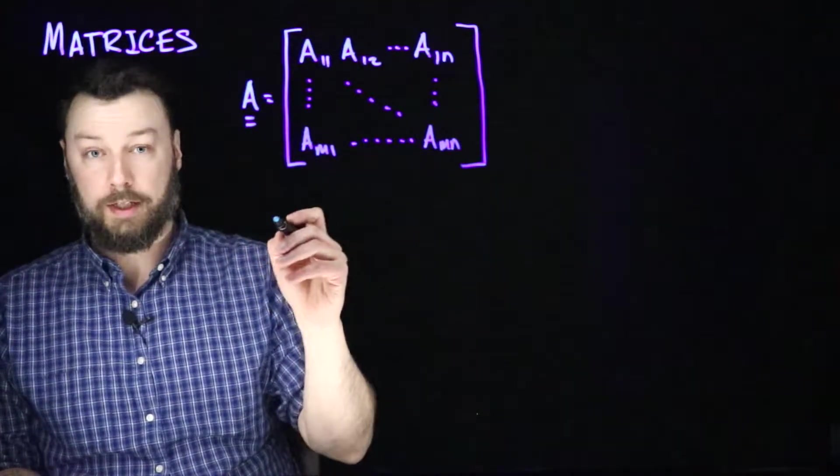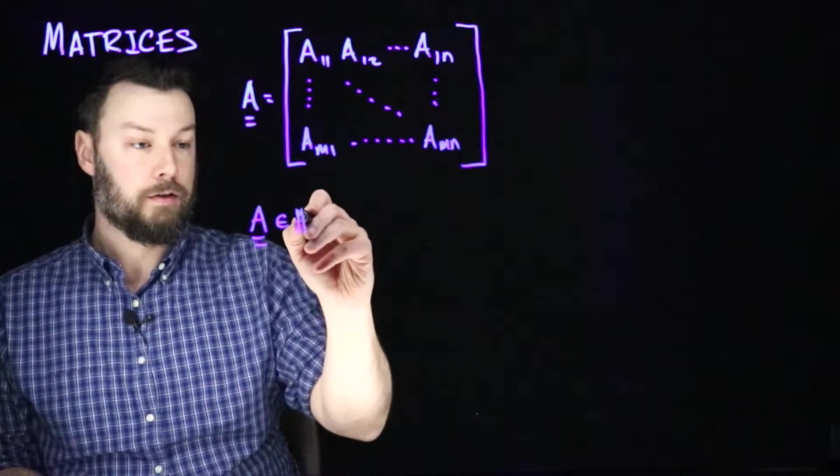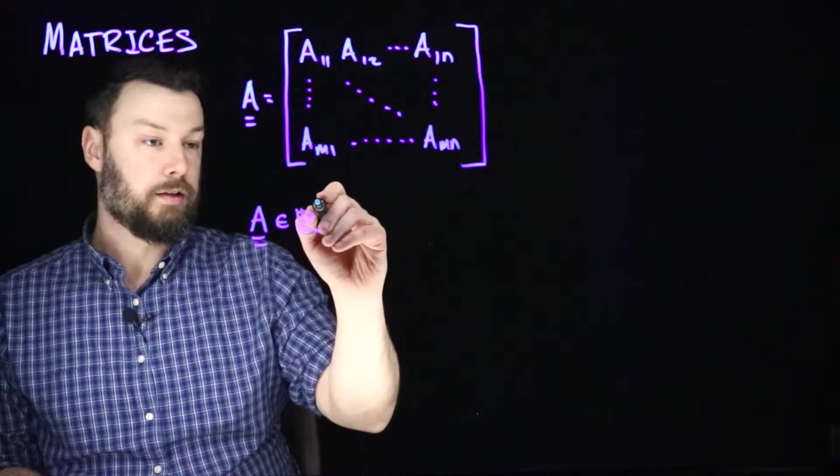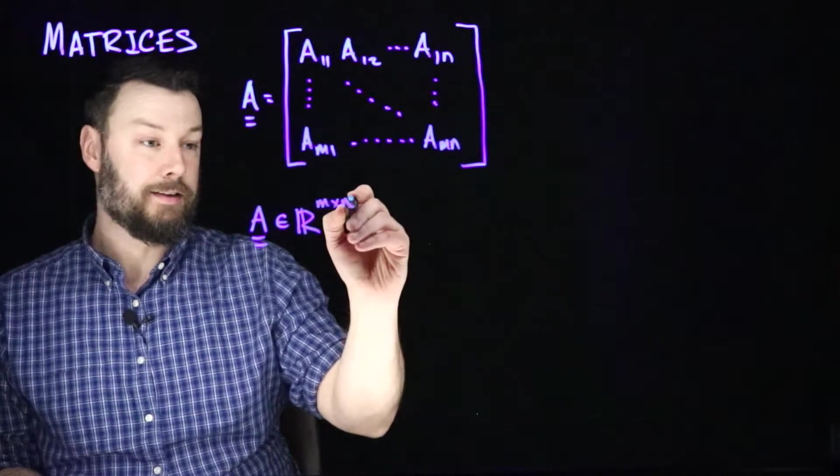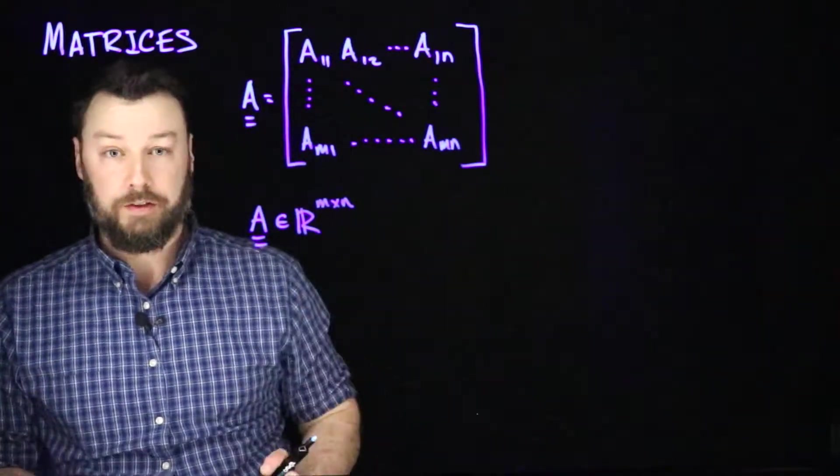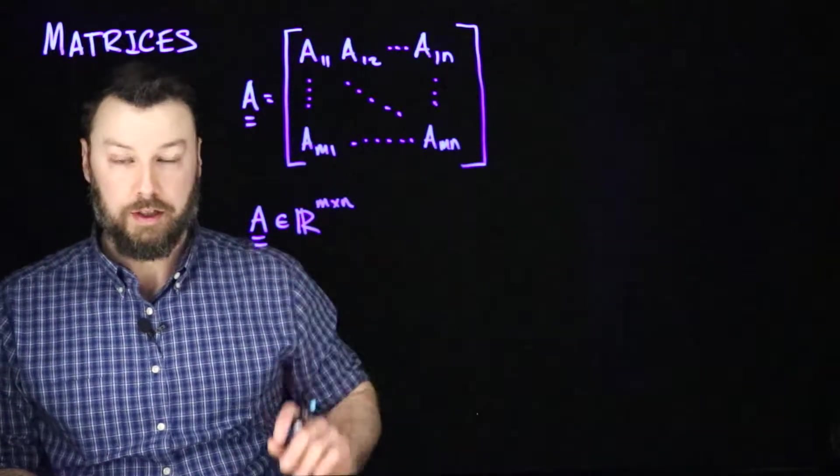Often, we'll write this as we'll say that A is in R to the M by N. This is analogously to the way we talked about vectors living in RN. These matrices live in the space R M by N, M rows, N columns.